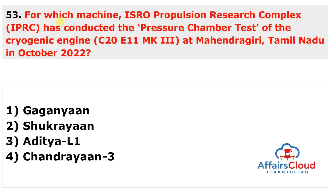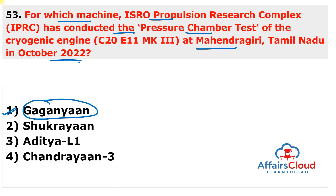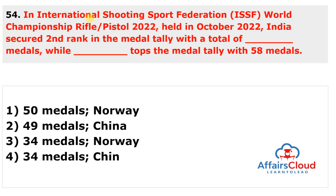Next question: for which mission did ISRO's Propulsion Research Complex conduct a pressure chamber test of the cryogenic engine at Mahendragiri, Tamil Nadu in October 2022? The answer is Gaganyaan. ISRO's Propulsion Research Complex successfully conducted the pressure chamber test of the cryogenic engine at Mahendragiri, Tamil Nadu. The test was conducted for about 30 seconds to check the efficacy of the engine for use in Gaganyaan, which is designed for India's human space flight program.